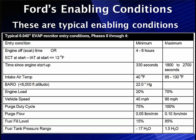Fuel tank pressure can't be any more than a vacuum to start with — minus 17 inches of water, which is less than half a psi — and typically not above 1.5 inches H2O of pressure. These are the enabling conditions that must happen before we're allowed to run the EVAP test. Remember, the EVAP test has nothing to do with normal purge — this is testing for leaks. Two different functions.